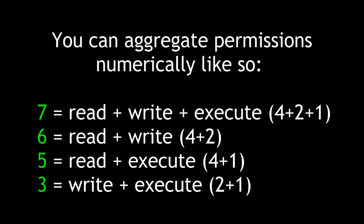For example, you can aggregate permissions numerically. 7 is the combination of read, write, and execute, or 4 plus 2 plus 1. 6 is read and write, or 4 plus 2. 5 is read and execute, or 4 plus 1. And 3 is write and execute, or 2 plus 1.